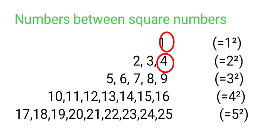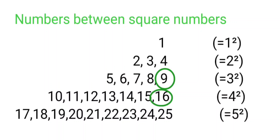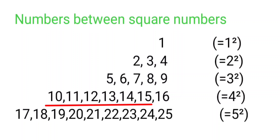The square numbers are 1, 4, 9, 16, 25. Between 1 and 4 (that is, between 1² and 2²), there are 2 non-square numbers. Between 4 and 9 (that is, between 2² and 3²), there are 4 non-square numbers: 5, 6, 7, 8. Between 9 and 16 (between 3² and 4²), there are 6 non-square numbers: 10, 11, 12, 13, 14, 15.